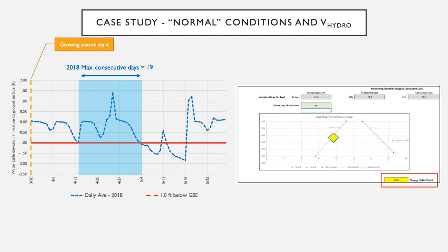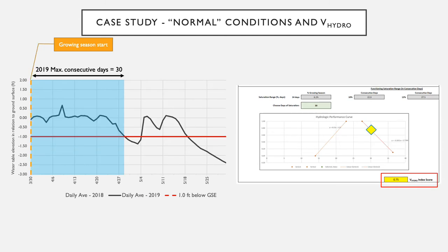In 2018, the maximum saturation period occurred from mid-April to early May, and we observed 19 consecutive days of saturation at this particular location. That equated to a V-Hydro index score of 0.56, which puts us on the rising limb of the performance curve. At the same well, same site, in 2019, we observed a maximum consecutive days of saturation of 30, which equates to a V-Hydro index score of 0.75. The important difference is that in 2019, we're now on the recession limb of the performance curve.